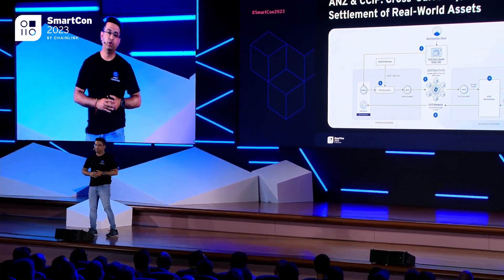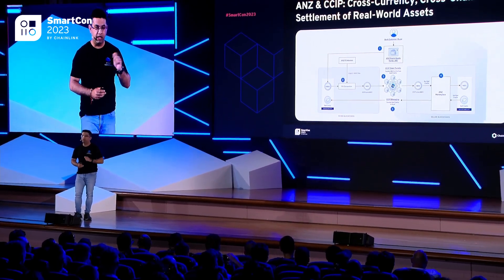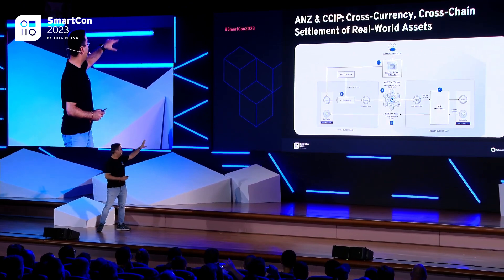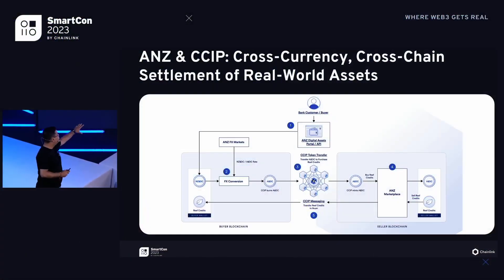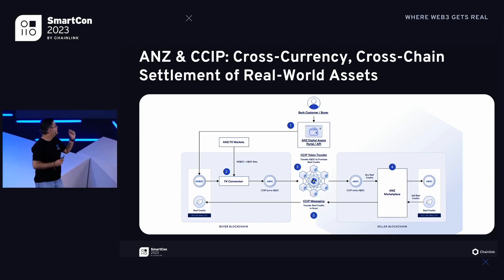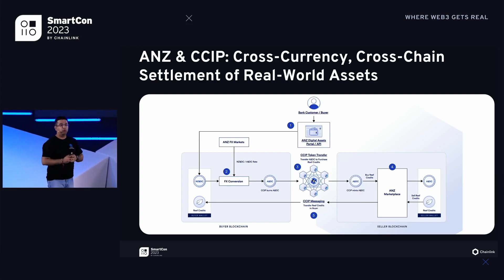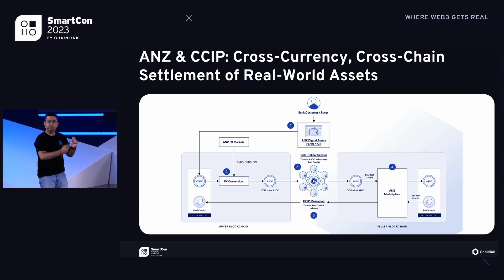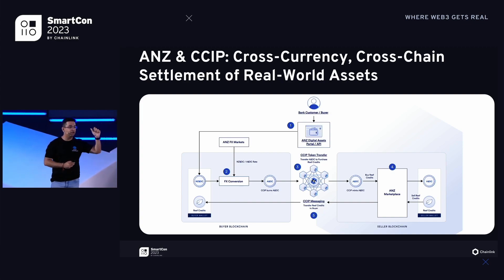That's where CCIP comes into picture. What CCIP enables is seamless information and value flow. Let's look at this diagram and go into a bit of depth. The box on the left symbolizes the chain on which the buyer of the tokenized asset is. The buyer has New Zealand dollar stablecoin. On the other chain — the seller's blockchain — that's where the Reef credit, the tokenized asset the buyer wants to purchase, lives. But the seller wants to receive Australian dollars. So we have a mismatch: the buyer has NZD, the seller wants to sell and receive AUD — cross-chain, cross-currency asset settlement.